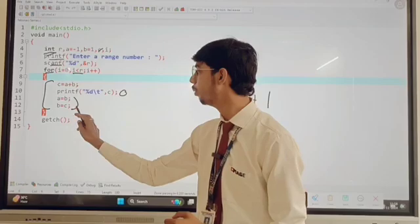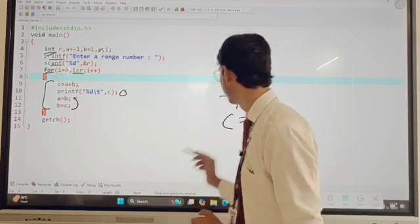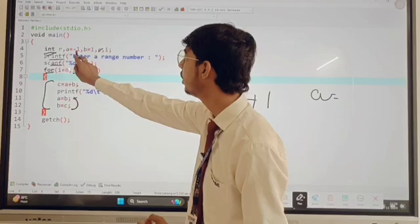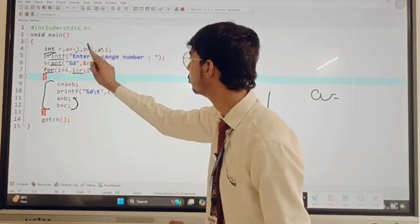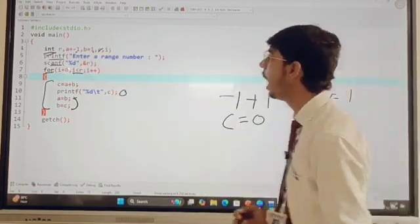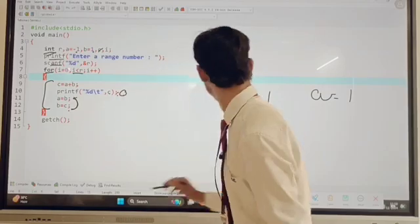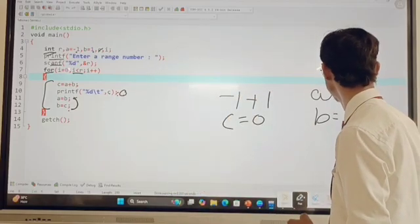Then we swap the both value, a is equal to b, means a is equal, here we write a is equal to minus 1 and a is equal to b means 1, so a is equal to 1 and b is equal to c. Here we write c is equal to 0, then b is equal to 0.